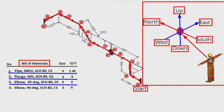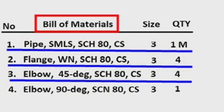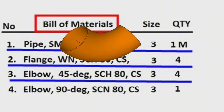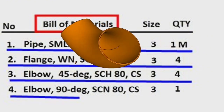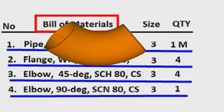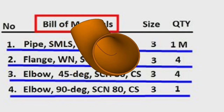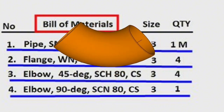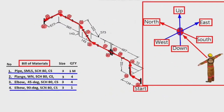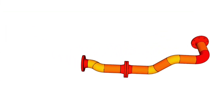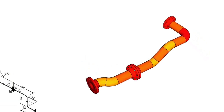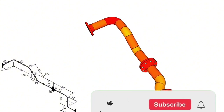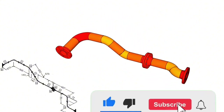Detail number 4 was used in 1 place in the pipe drawing: elbow 90 degree type, wall thickness schedule 80, carbon steel material, size is 3 inches, quantity is 1 piece. We learned the materials used on this pipe drawing. Now let's look at the 3D model view of this pipeline. The 3D view of the pipeline helps us understand pipeline isometry more easily. By comparing the 3D model with the pipe isometric, the pipe drawing can be easily read.